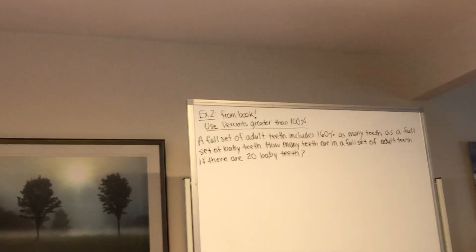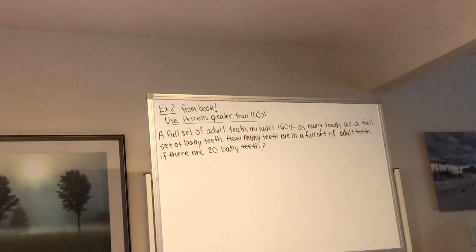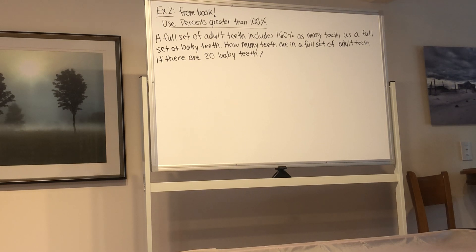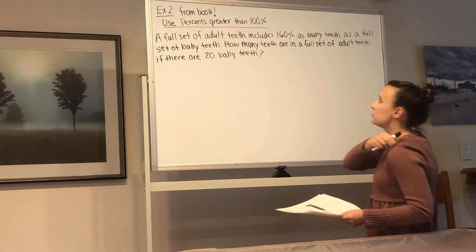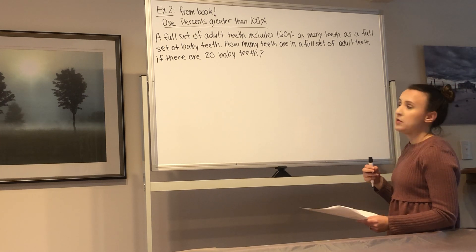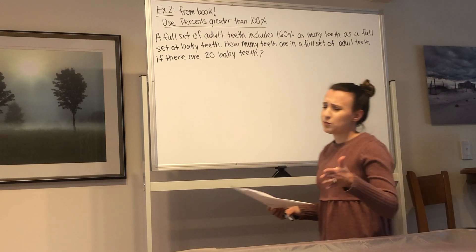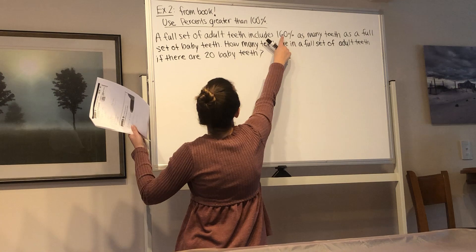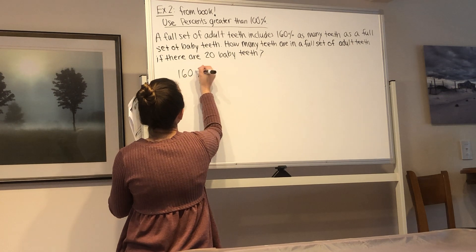I'm going to go over to the next problems over on this whiteboard over here. This is example two in your book, and then we'll do example three, and then we'll be done. Sorry, this video is a little bit longer than usual. It's just a lot of information today. So, example two from your book. Use percents greater than 100%. A full set of adult teeth includes 160% as many teeth as a full set of baby teeth. How many teeth are in a full set of adult teeth if there are 20 baby teeth?